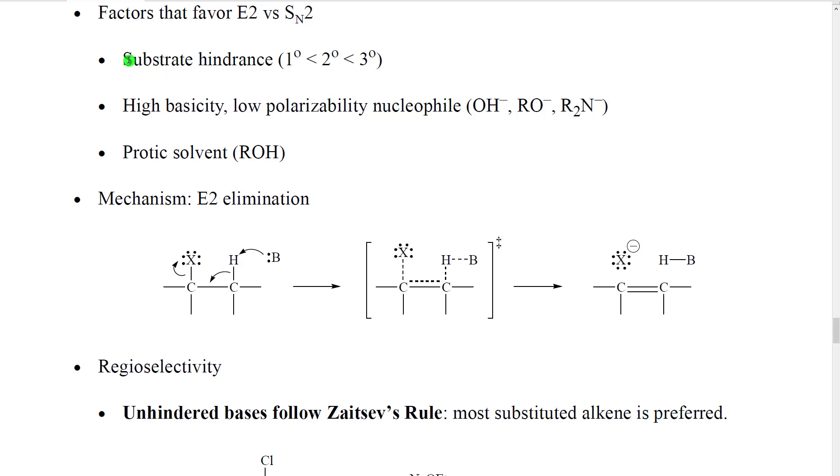This is basically a review reaction. We talked about that steric hindrance in the substrate favors E2 and disfavors SN2. We also found that high basicity, lower polarizability nucleophiles like hydroxide ion, alkoxide ion, and nitrogen negative with two carbon groups tend to favor E2, and finally protic solvents like alcohols favor E2.